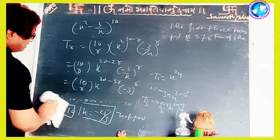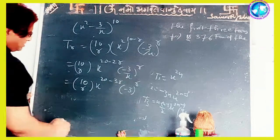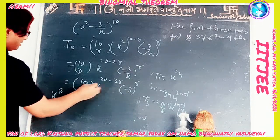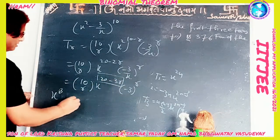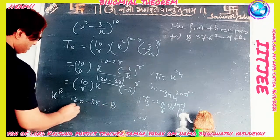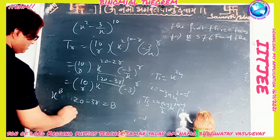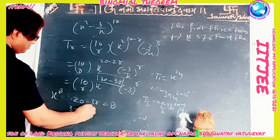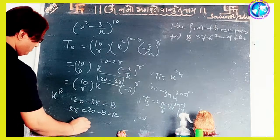For the coefficient of x^8, we compare: 20 - 3r = 8, therefore 3r = 12, so r = 4.